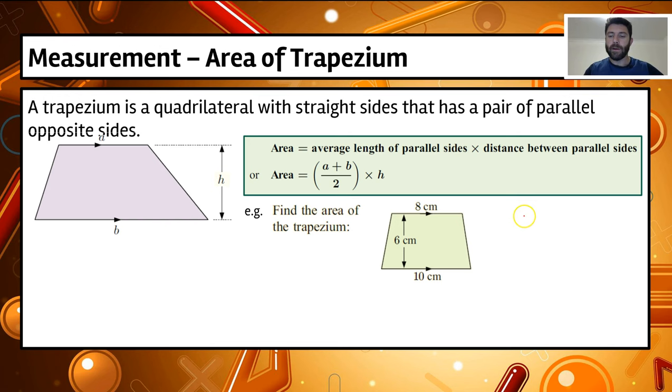So if we have a look at our area formula, so our area equals A plus B divided by 2, that's all in brackets so we do that first and then we multiply that by the height.